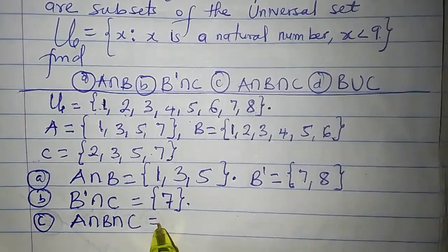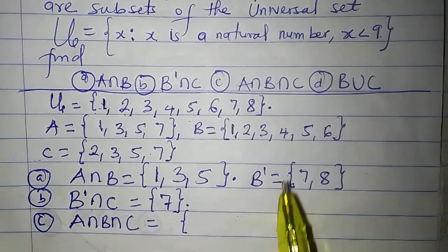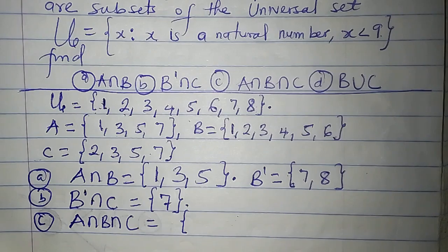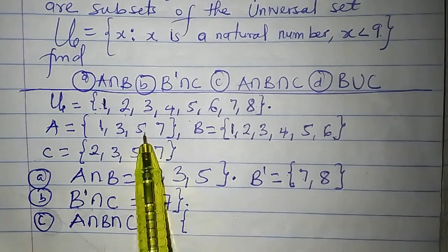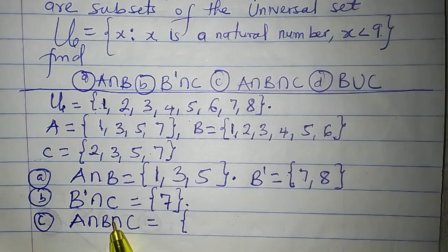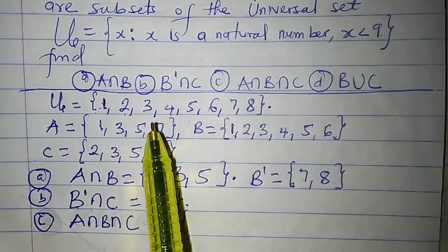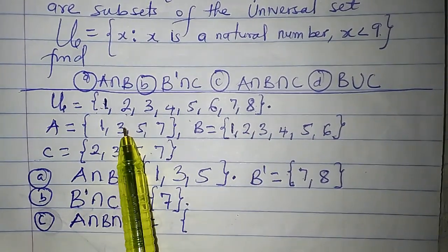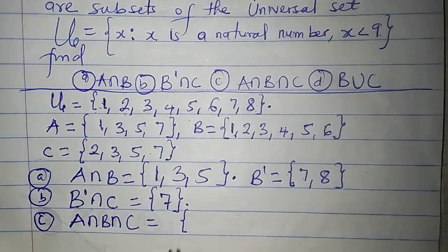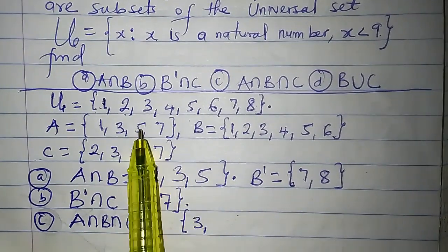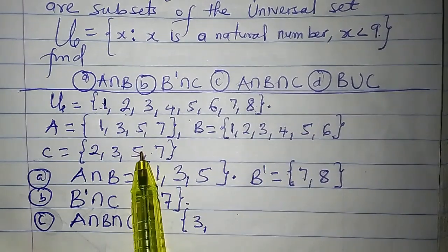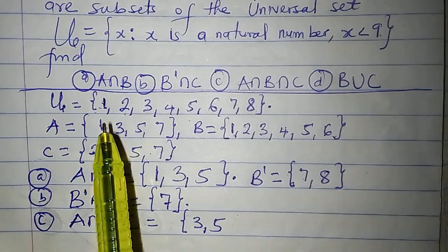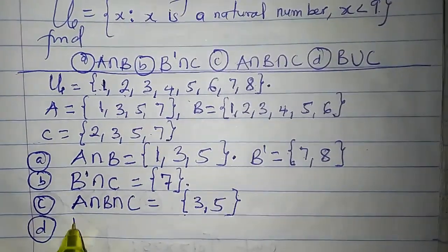What is A intersection B intersection C? A intersection B intersection C is the set of all elements found in A, B, and C. What is common to all three? 3 is in A, 3 is in B, and 3 is also in C. 5 is in A, 5 is in B, and 5 is in C as well. Those are the only two numbers common to A, B, and C. So A intersection B intersection C is {3, 5}.